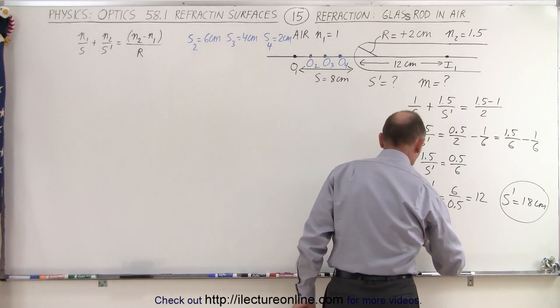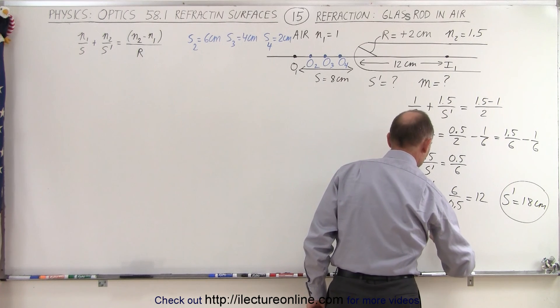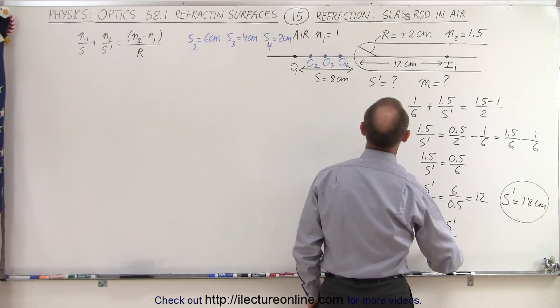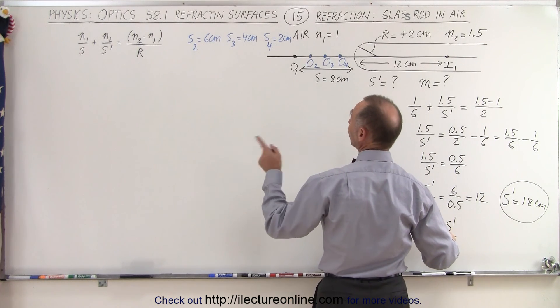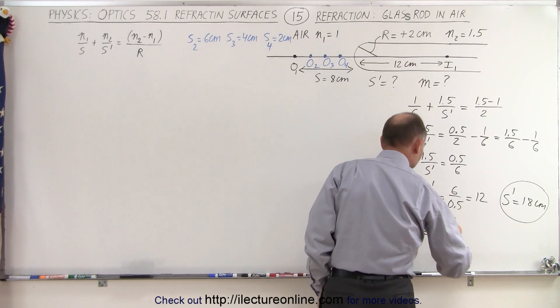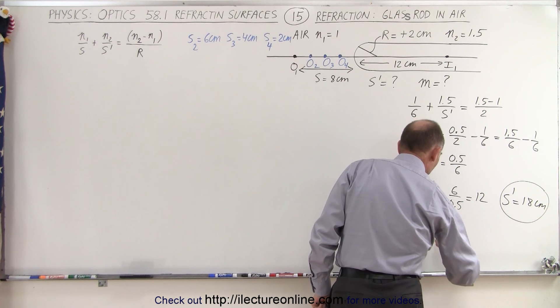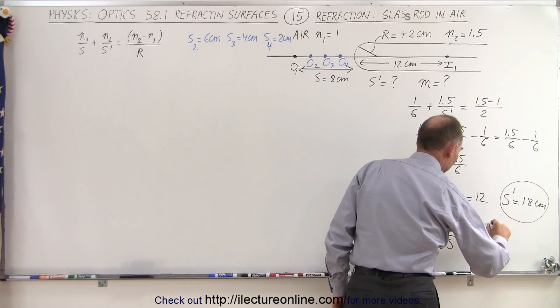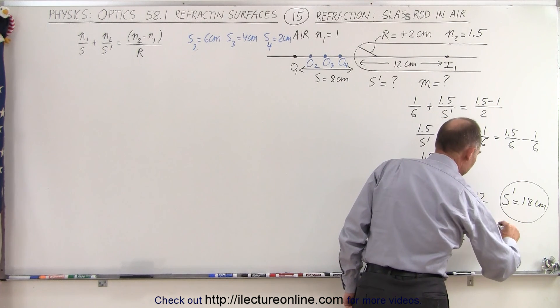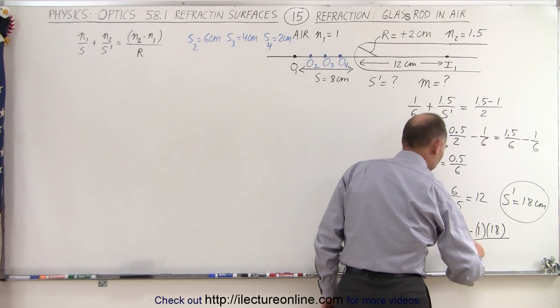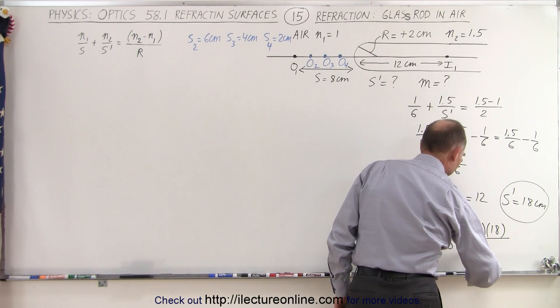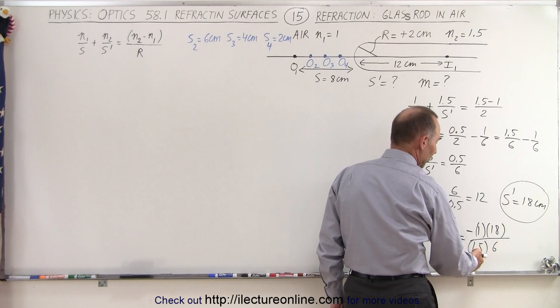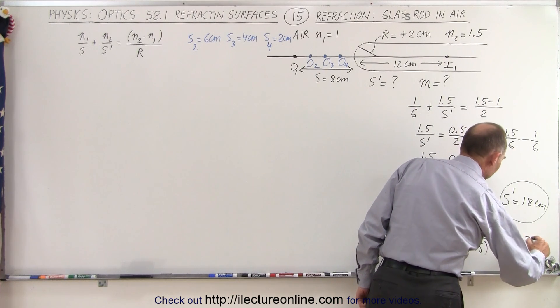Magnification. The magnification in this case is going to be minus s prime over s, and then the indices of refraction for s prime, we associate that normally with n2, but in this case, that's going to be n1 over n2. So that's going to be minus 1 times s prime, which is 18, divided by n2, which is 1.5, times s, which is 6. So that's 3 divided by 1.5, which is going to be a minus 2.